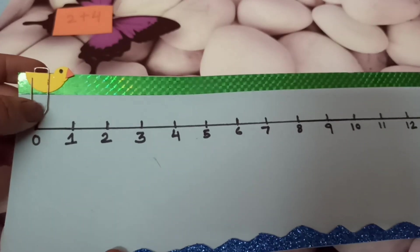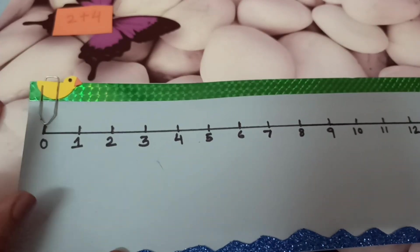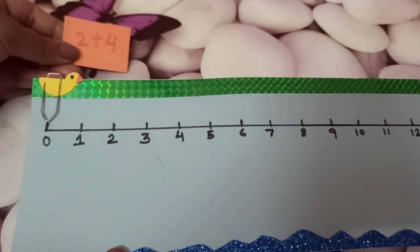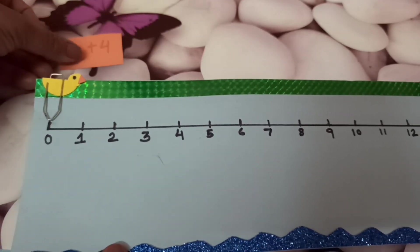If students are watching me, if small children are watching me, don't do this by yourself. Ask your parents to do this for you. So here you can see our duck is on number 0.